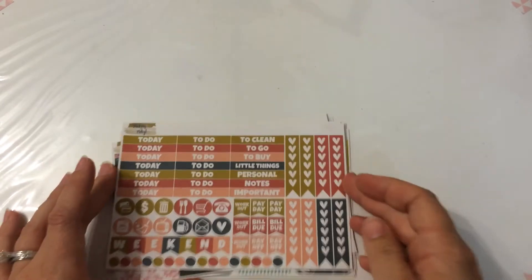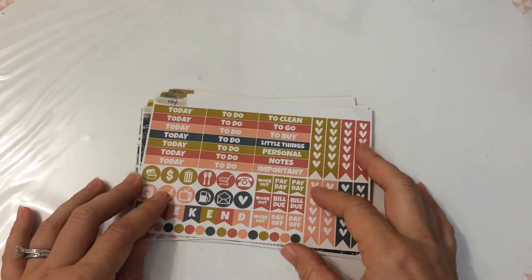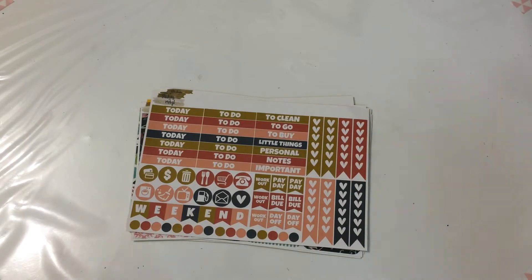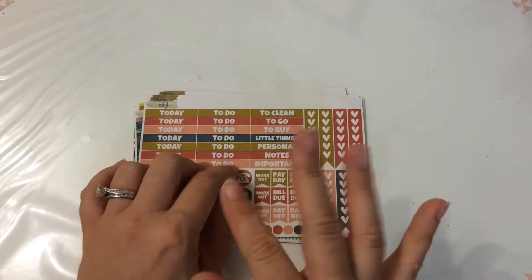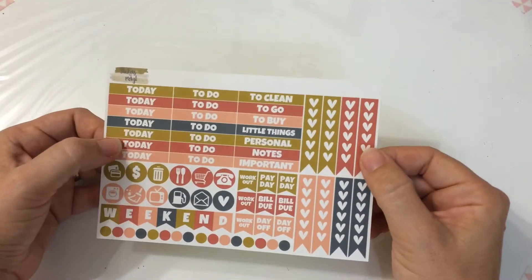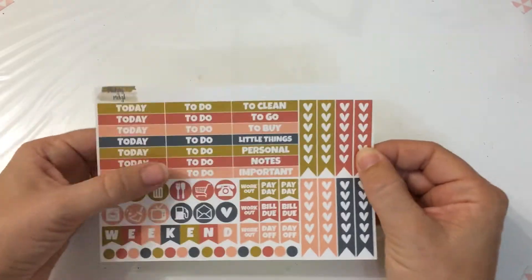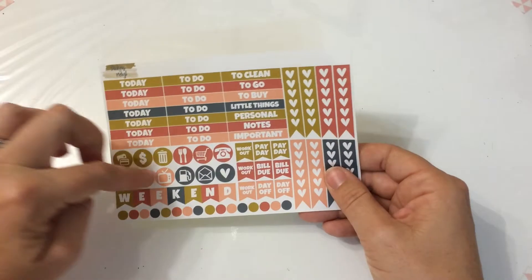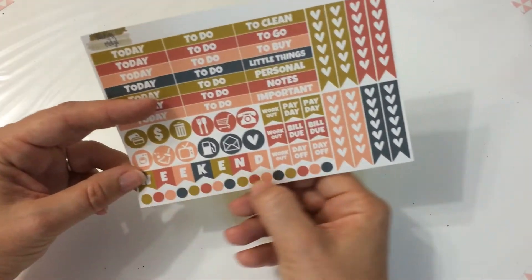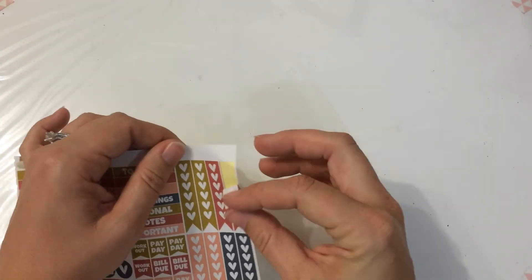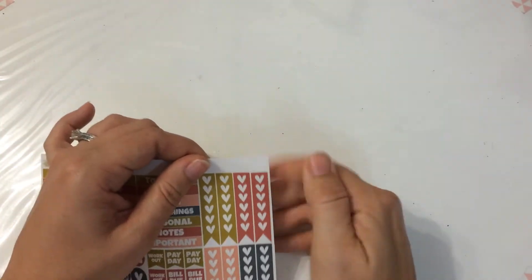My next shop that I've bought from was Stickers by Merril. This was two grab bag packs. I think they might have been five dollars. So five sheets. And I bought two packs. The first sheet I got in it is from one of her kits and it's got all of the headers, the checklists, icons, paydays, workouts, bill dues, the weekend banner and these dots. Her stickers always peel really nicely.